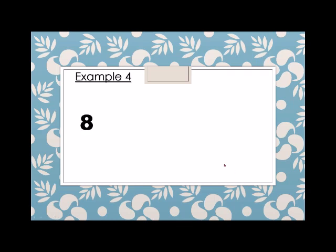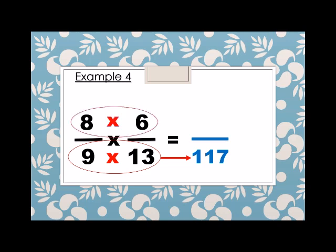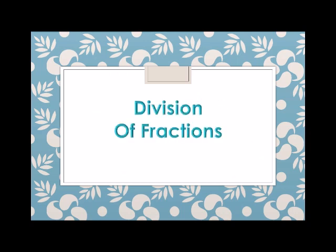Example number four: we have eight over nine times six over thirteen. By the two rules, we multiply first the denominator: nine times thirteen equals one hundred seventeen. And then the numerator: eight times six equals forty-eight. So eight over nine times six over thirteen equals forty-eight over one hundred seventeen.